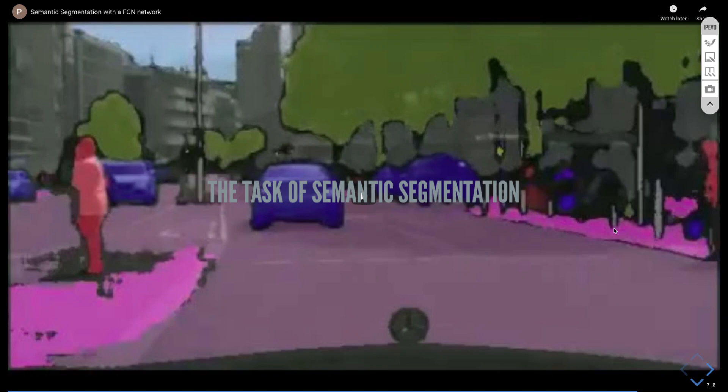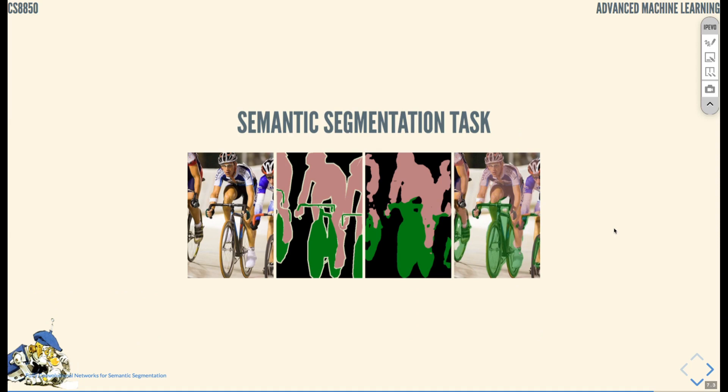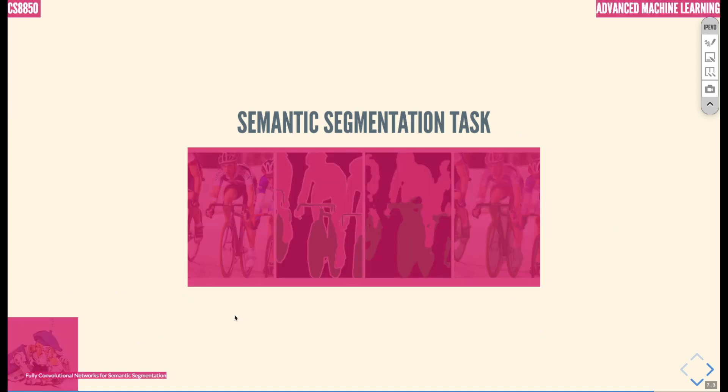Is it a tree, a car, the road, a person, or a bike? This task is called the semantic segmentation task.